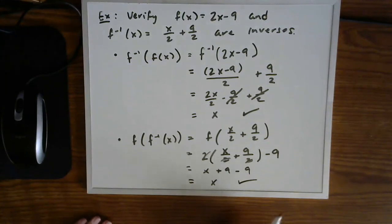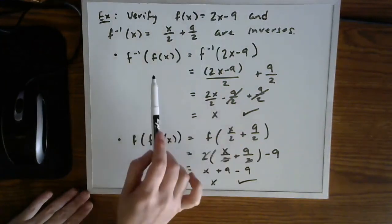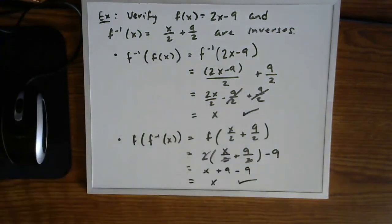And what you will notice upon distribution is that the 2's cancel, x plus 9 minus 9, which is also just x. So again, anytime you are asked to verify whether or not two functions are inverses, you must go through these steps, leaving x as x in the work.